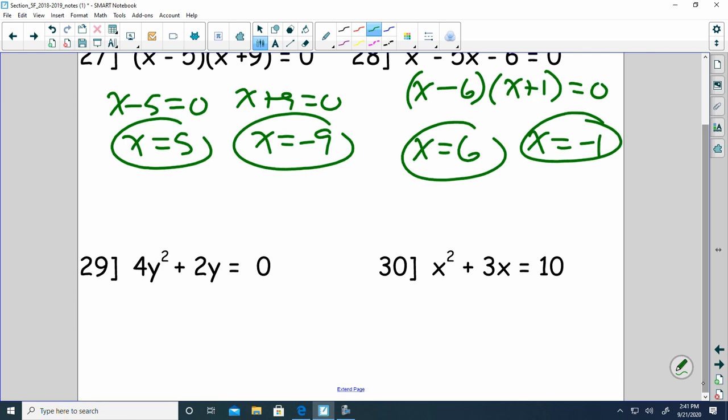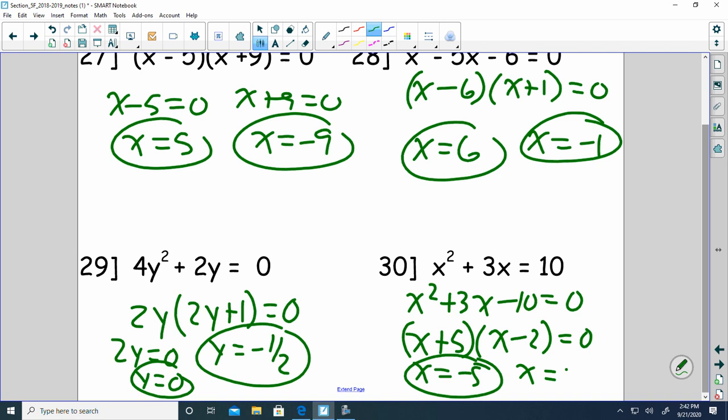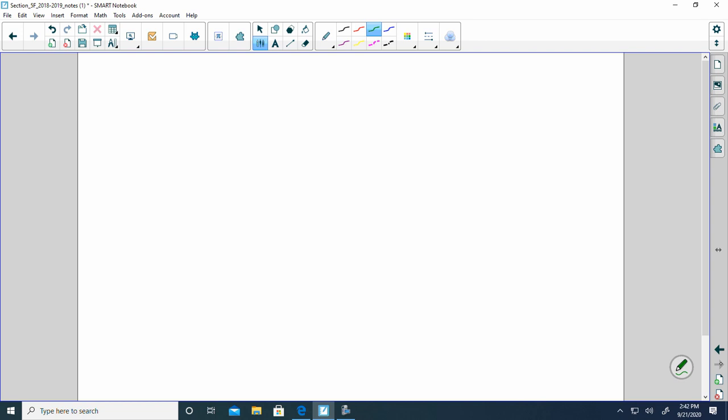Your variable doesn't always have to be x. It sometimes could be y. On this one, we're going to look and we're going to say, well, I can factor 2y out of both of them. That leaves me 2y plus 1 equals 0. So you're going to have 2y equals 0. So y equals 0 is one of your solutions. And your second one, you're going to subtract 1, then divide by 2. So negative half. 30 is a tricky one if you don't see what you're supposed to do. It has to be equal to 0. So you have to bring the 10 over and subtract it. And then from there, you're going to say, well, x plus 5 and x minus 2 are our solutions. So I get x equals negative 5 and x is equal to 2. Those are my solutions. That's where it crosses the x-axis.